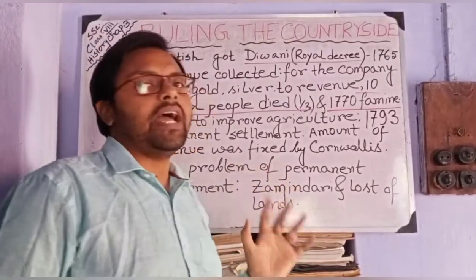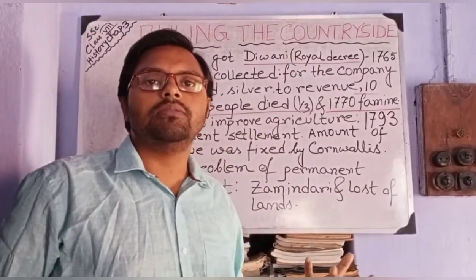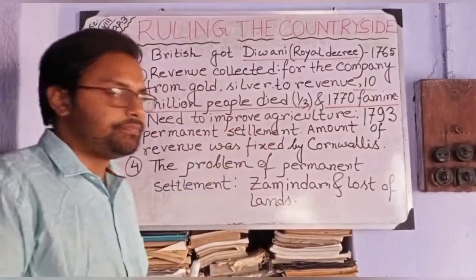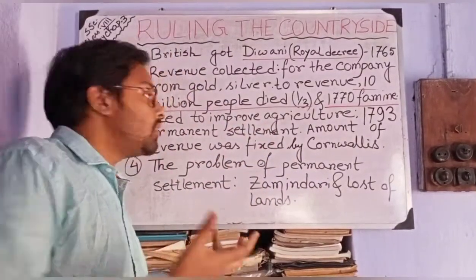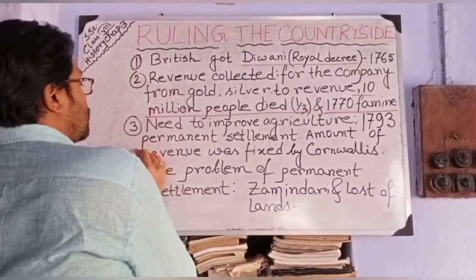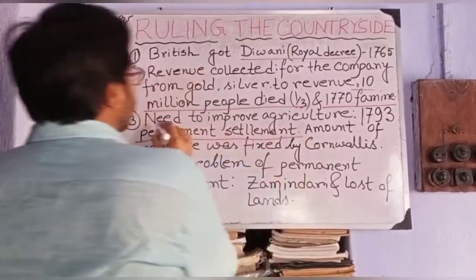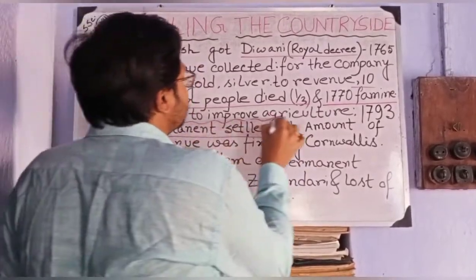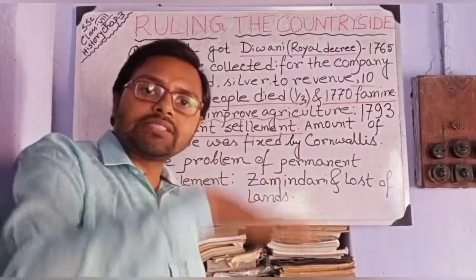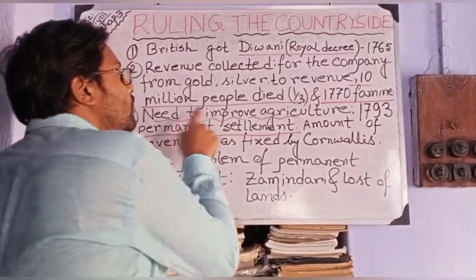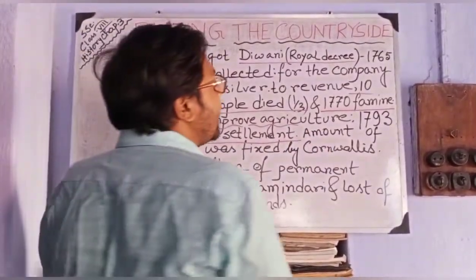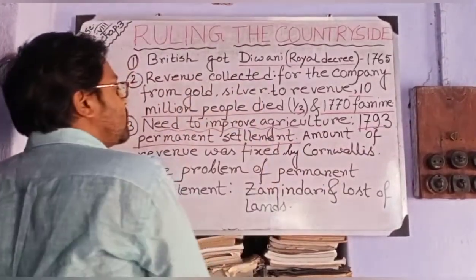The British thought that this pressurized system could not work anymore. Later, they changed their process. What was the changed process? They changed their process to permanent settlement. They needed to improve agriculture, because due to their pressure, the agricultural quality had decreased in Bengal. So in 1793, permanent settlement was adopted.